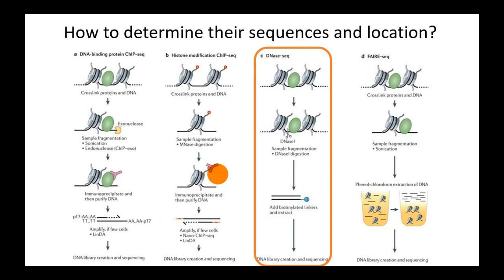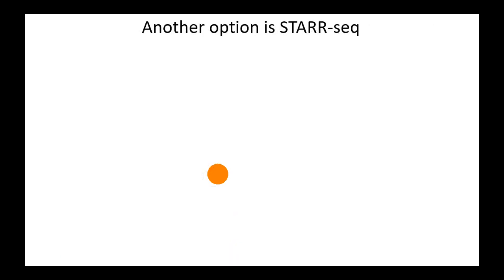First, you can use DNA sequencing because enhancers are typically found in accessible chromatin regions. You may also remember ChIP sequencing, or chromatin immunoprecipitation, which I've described earlier. You can target transcription factors and determine the sequence of regulatory regions. But what are other options?